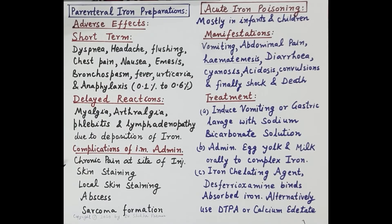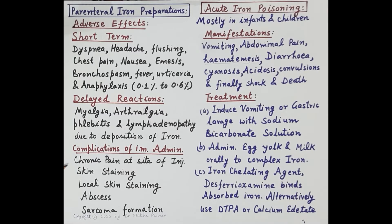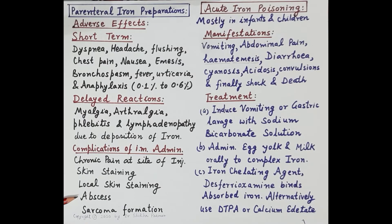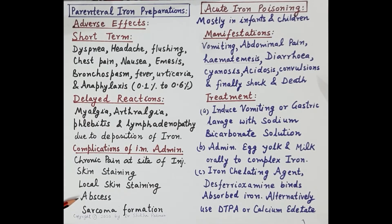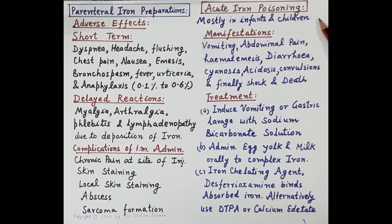Complications of intramuscular administration include chronic pain at the injection site, local skin staining, formation of abscess (a painful swollen lump), and sarcoma formation — meaning a tumor can also develop. This concludes the discussion of oral and parenteral iron preparations. Now let's discuss acute iron poisoning.